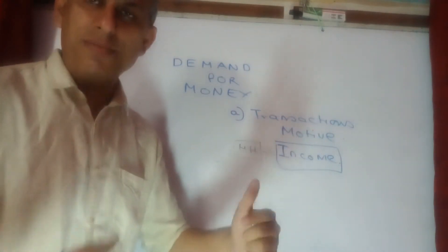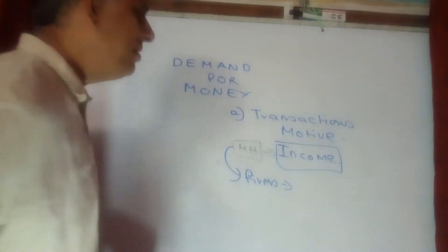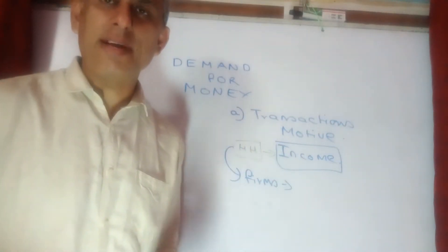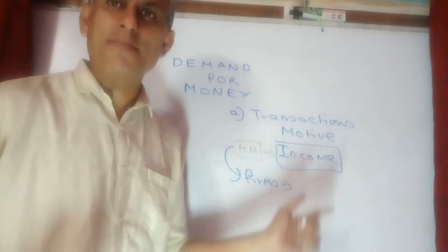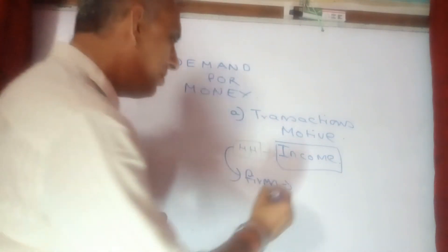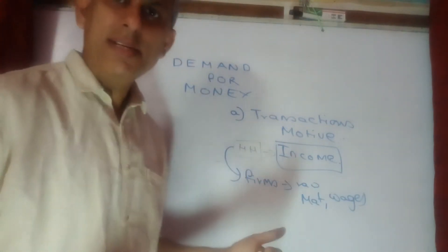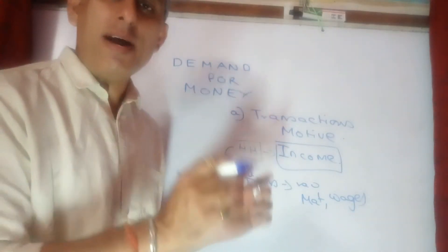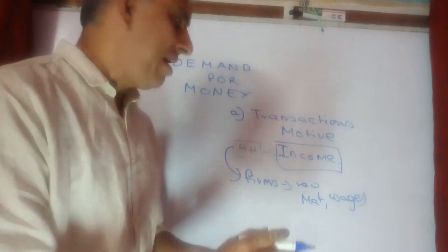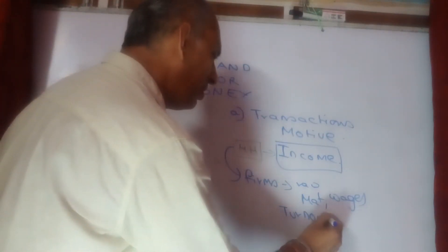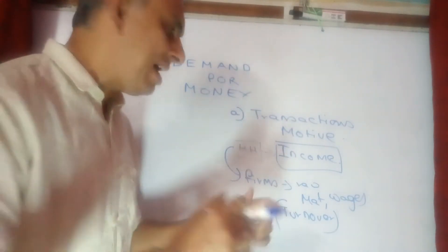The next group of people after households are the firms. Why do firms require money? They might require money for buying raw materials on a regular basis and for paying workers' salaries and wages on a regular basis. So their transactions motive is represented on the basis of raw material requirements and wage requirements — different from consumption requirements. Remember, for firms, I would rather say turnover. Higher the turnover, higher the sales, and higher shall be the demand for transaction motive.